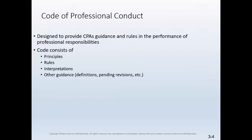The AICPA Code of Professional Conduct, adopted in 2014, provides guidance and rules for CPAs in the performance of their professional responsibilities. The code consists of principles, which are goal-oriented, positively stated statements on the profession's responsibilities to the public, clients, and fellow practitioners. The principles provide the framework for the rules, which are the requirements that are enforceable under the AICPA bylaws. Interpretations are issued by the AICPA Division of Professional Ethics to provide guidelines for the scope and application of the rules. Other guidance includes information such as the organization of the code, definitions, and pending revisions.